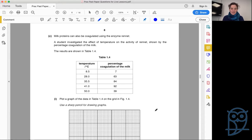Often you get your experiment, you do your experiment, and then you have some data that is provided that you then have to draft and generally answer a few questions about. We see here that milk proteins can also be coagulated using the enzyme rennet. A student investigated the effect of temperature on the activity of rennet shown by the percentage coagulation of milk.